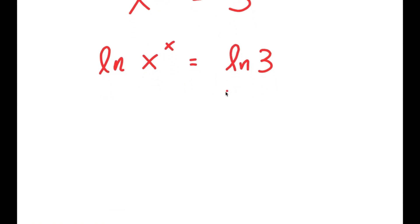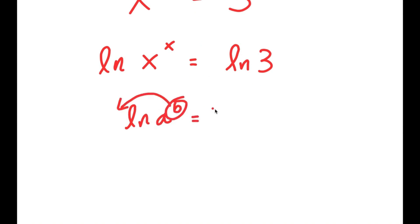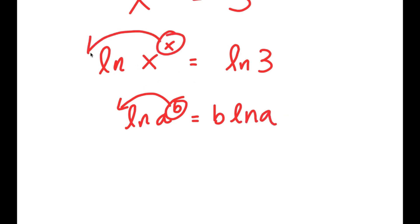An important property of logarithms is that if I have something in the form ln a to the power of b, I can move this exponent b to the front, so this turns into b times ln a. So in this case, I have ln x to the power of x, and I can move x to the front, so I get x times ln x is equal to ln 3.